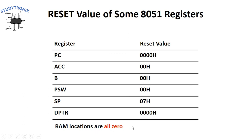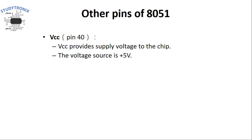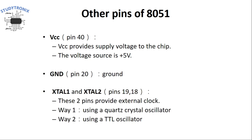Other pins of 8051 include VCC, which provides the 5V supply voltage. There is also a ground pin. The two pins XTAL1 and XTAL2 allow connection of an external crystal to the IC, which generates the clock signal. An internal block called the crystal oscillator generates the clock from this crystal. This concludes the pin descriptions — in the next lecture we'll see the memory organization of 8051.